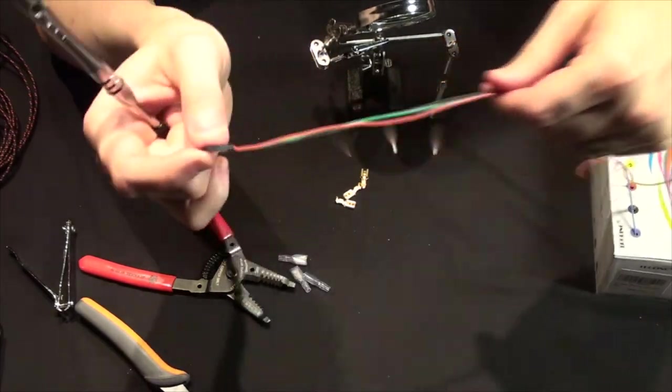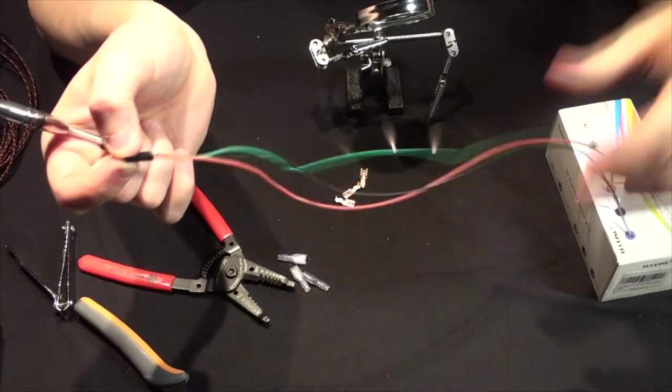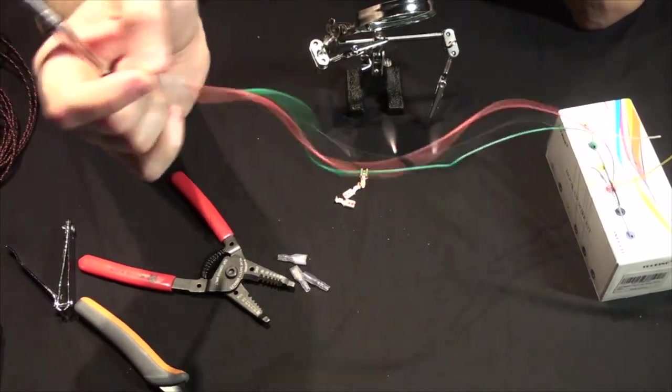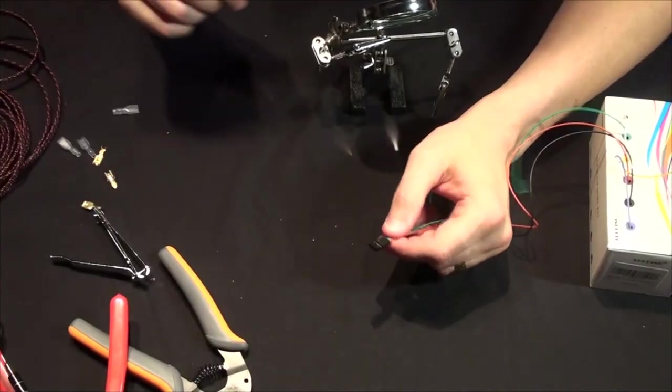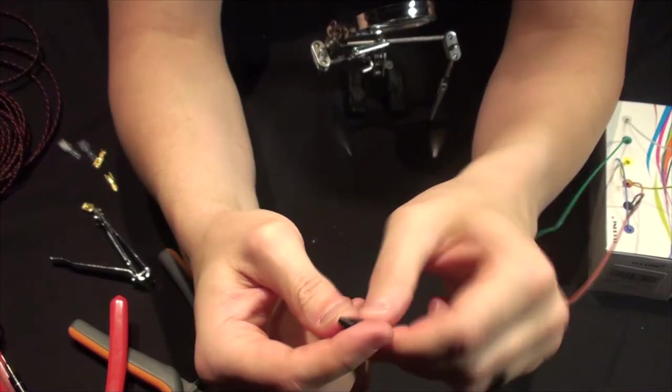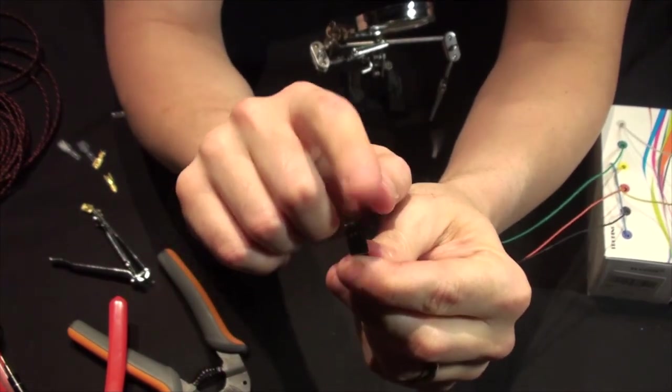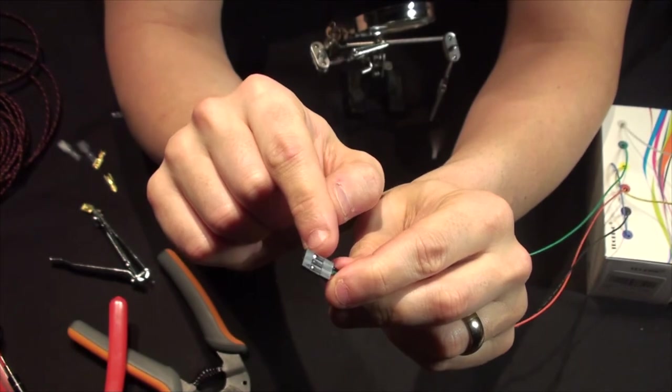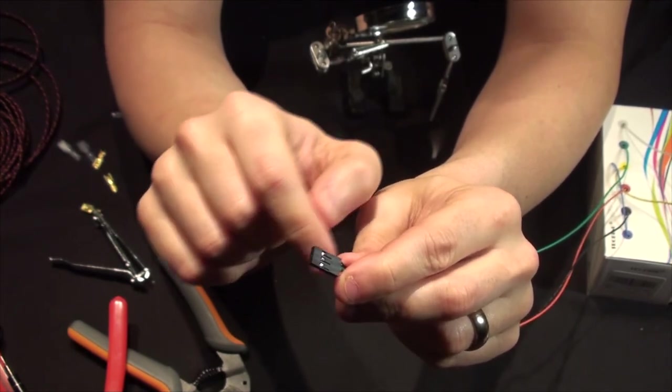The next step will just be deciding how long we want this to be and then cutting it off and so forth. Now a note on these is that the pins don't go all the way up to the top here. They're going to notch inside here and these little tabs will lock them down.